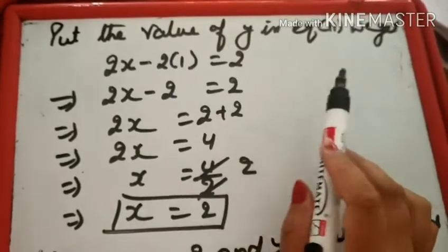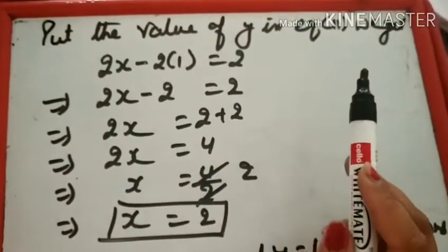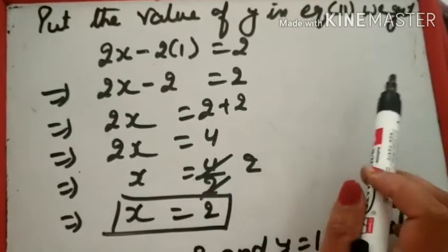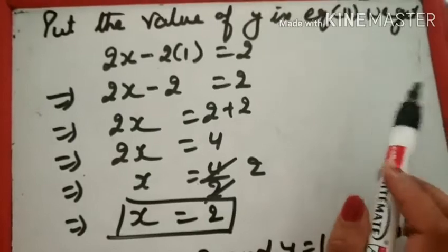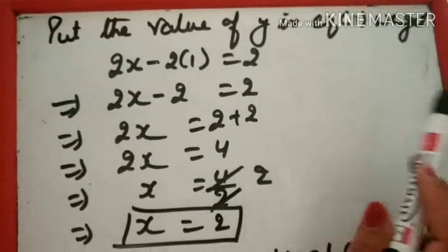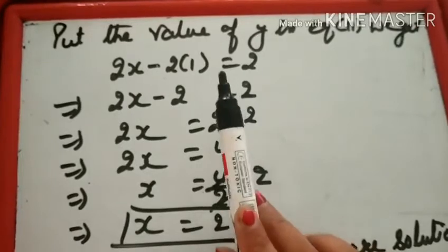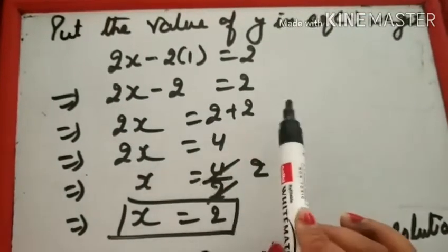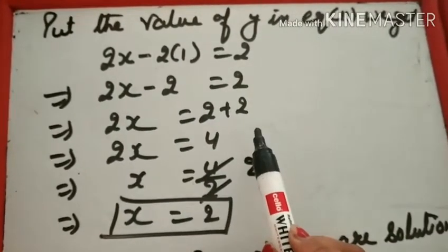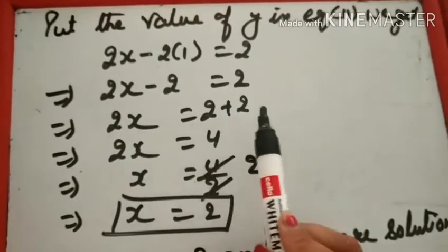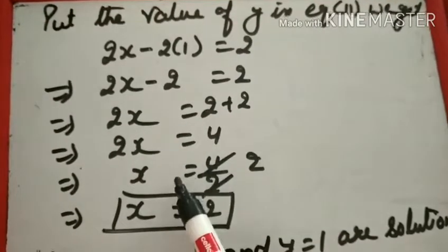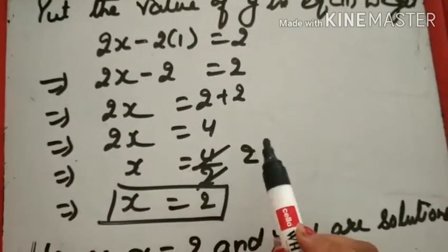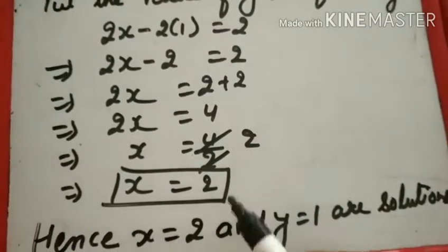अब Next Step में put the value of Y in Equation. हम First में भी put कर सकते हैं, Second में भी। मुझे Second value easier लगी, मैंने Second में put कर दिया। 2X − 2Y = 2, Y की value 1 है: 2X − 2(1) = 2. 2X − 2 = 2, this implies 2X = 4, X = 4/2 = 2.